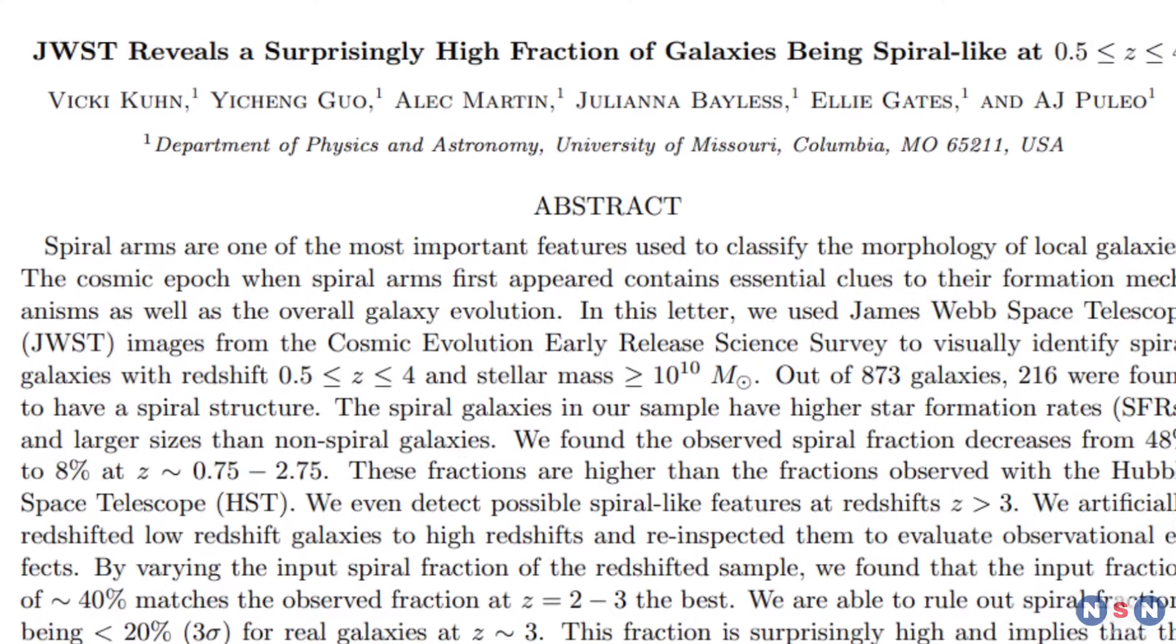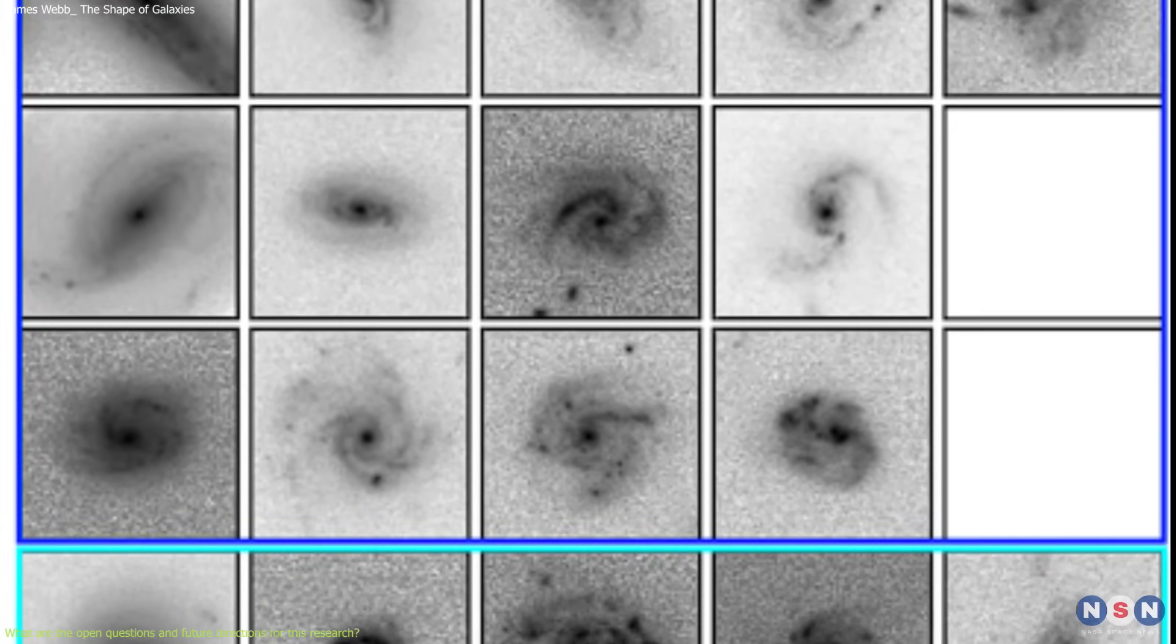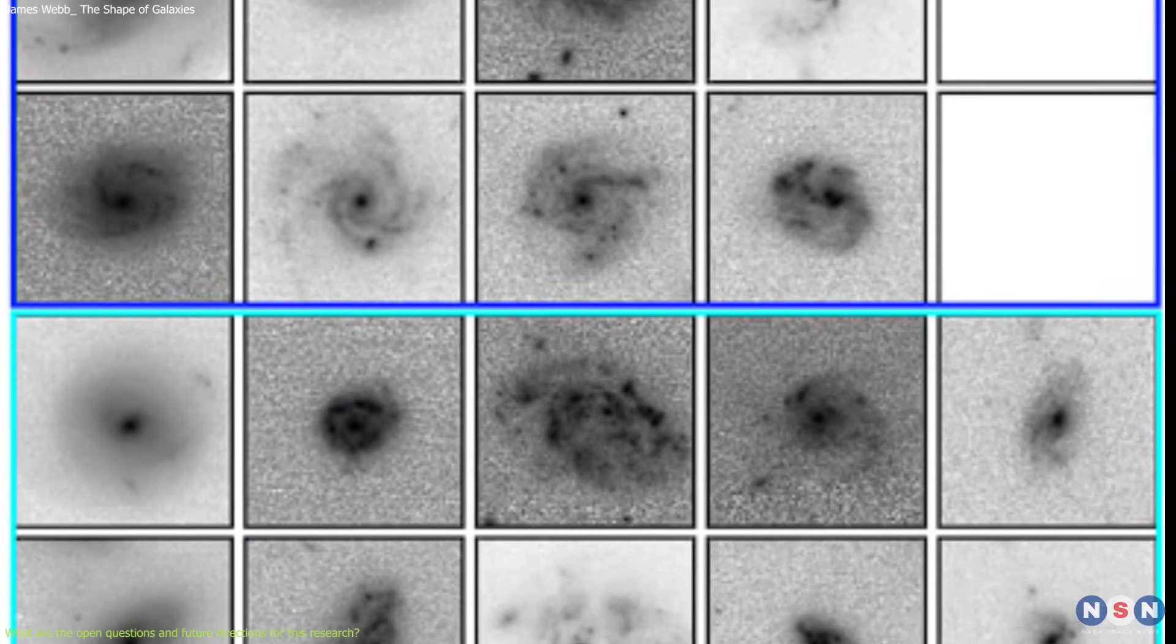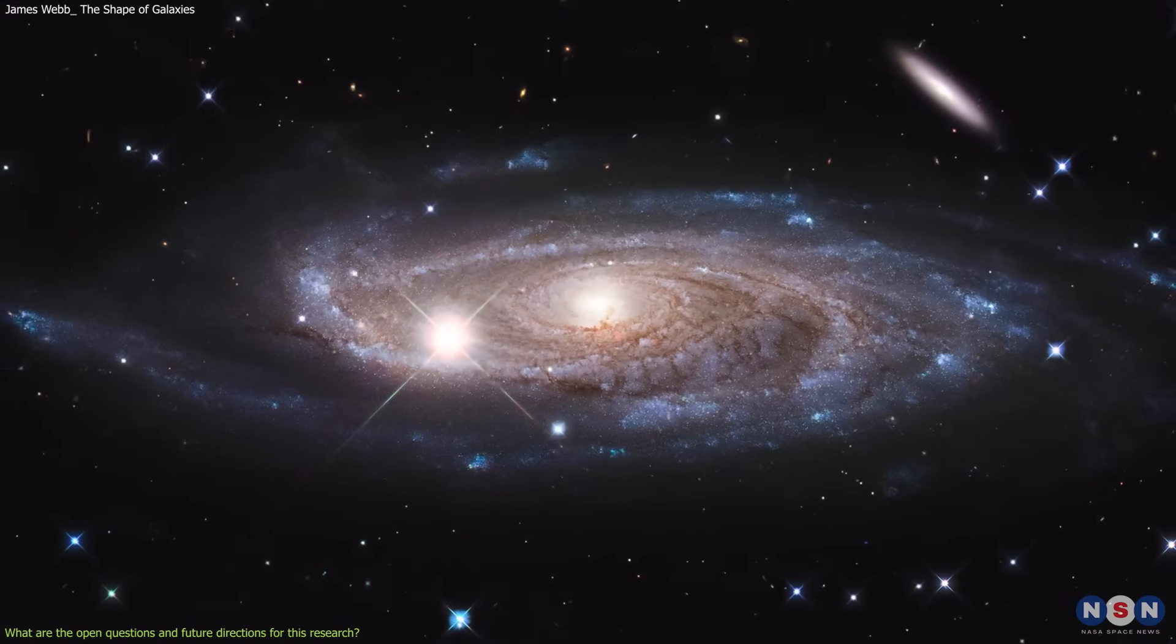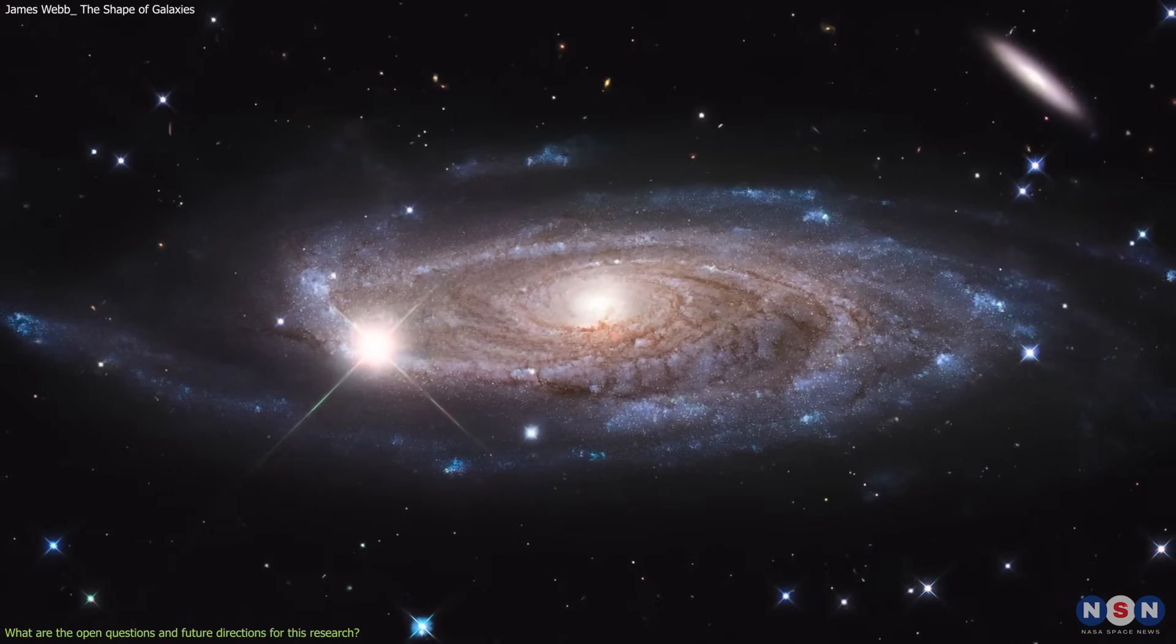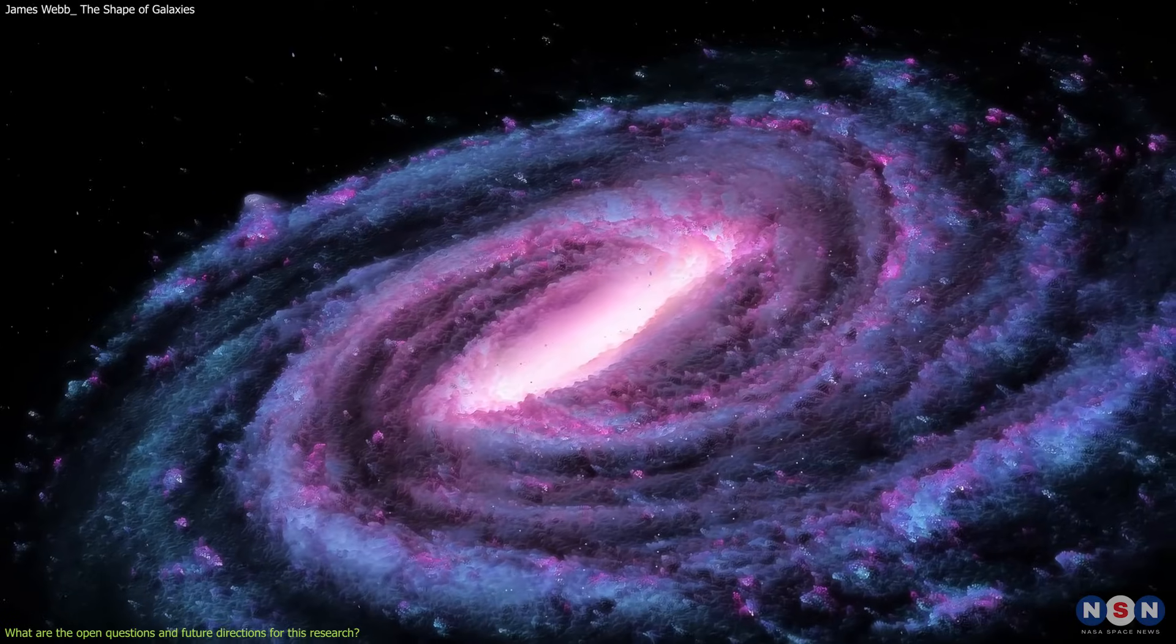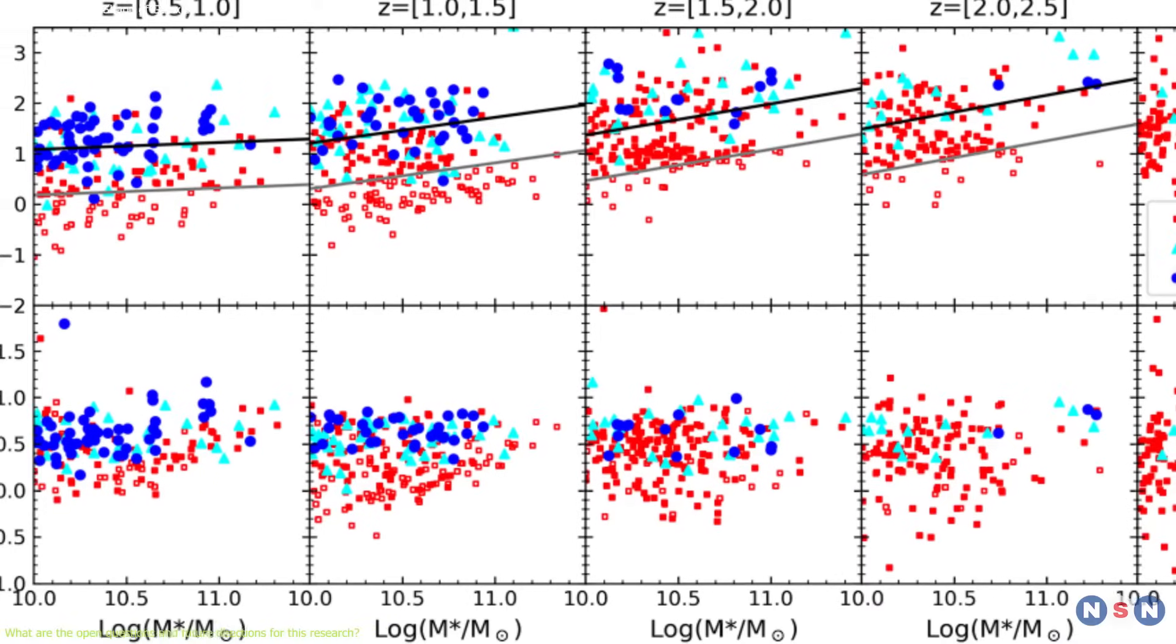This study is one of the first studies that used the James Webb images to study the morphology of galaxies in the early universe. It is a very impressive and important study, but it is not without limitations and uncertainties.